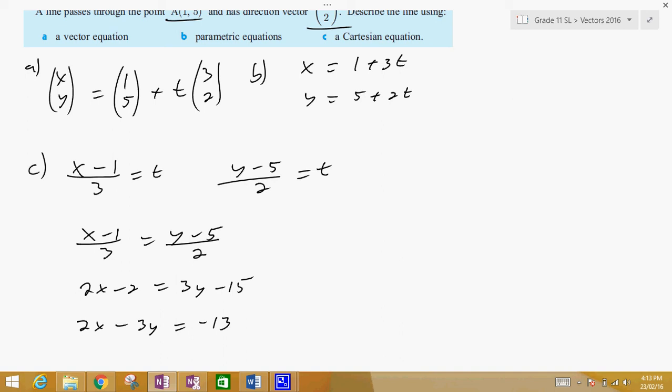You could also change it into y equals mx plus b. So for instance, if we kept on going with this one, we can change this to negative 3y equals negative 2x minus 13. And then y is equal to negative 2x divided by negative 3 minus 13 divided by negative 3. So y is equal to 2x over 3 plus 13 over 3.